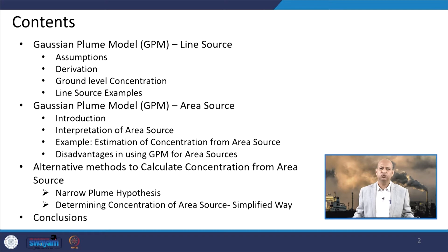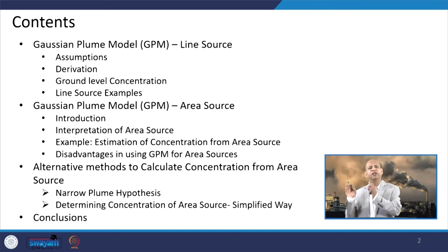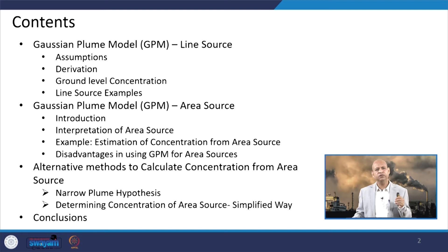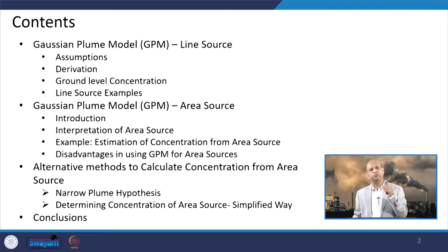Then we will go for the area source dispersion model. As mentioned during the point source Gaussian dispersion model, it can be extended to line source because a line is nothing but a series of points. We can integrate and develop a line source model, or iterate the point source many times, but that is very time-consuming and resource-consuming. So we go for empirical derivations for line source modeling.